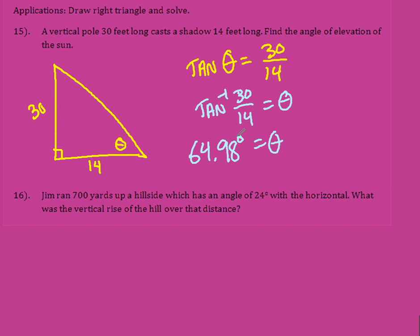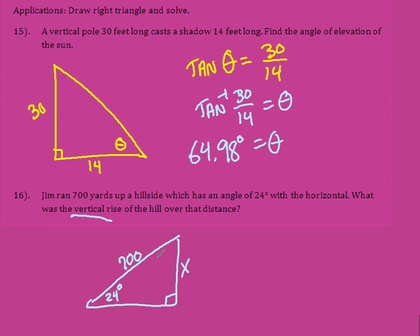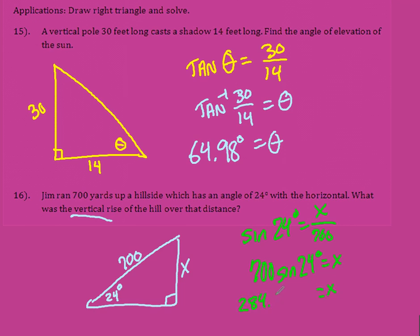For number 16, Jim ran 700 yards up a hillside with an angle of 24 degrees with the horizontal. We want the vertical rise of the hill — that's x. Based on the angle I have the side opposite and the hypotenuse, so that's sine. Sine of 24 degrees equals x over 700. X is up high, so I multiply: 700 times sine of 24 degrees equals x, giving 284.69 yards.